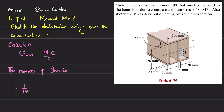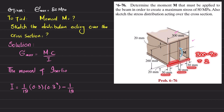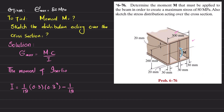So I = (1/12)(0.3)(0.3)³ minus (1/12) times the width of the hollow sections. The total width is 300, and subtracting the web portions: 300 minus 90 gives 200, divided by 2 equals 105 mm for each hollow portion. The height of the hollow section is 260 mm. So: minus (1/12)(0.105)(0.260)³.